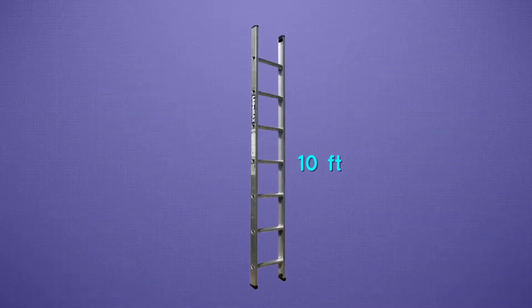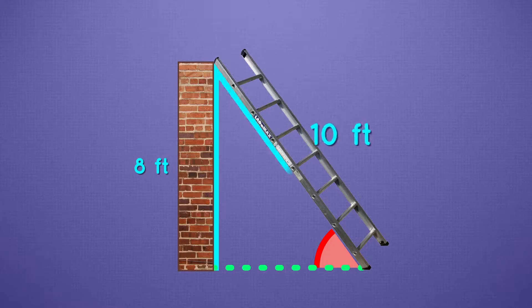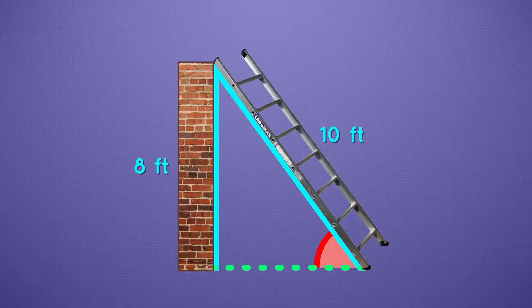Look at this. We have a 10-foot tall ladder, and we want to use it to reach the top of an 8-foot wall. What is the angle that will be made by the ladder on the ground? Let's see what we know. We know that the height of the wall is 8 feet, and the length of the ladder is 10 feet. And the unknown is the measure of our angle here.